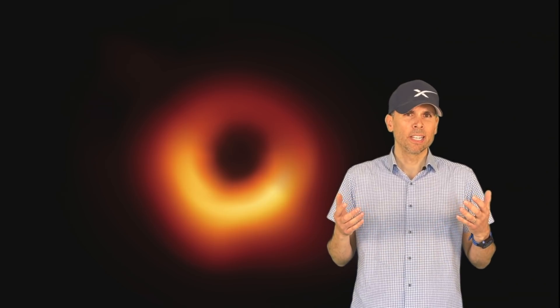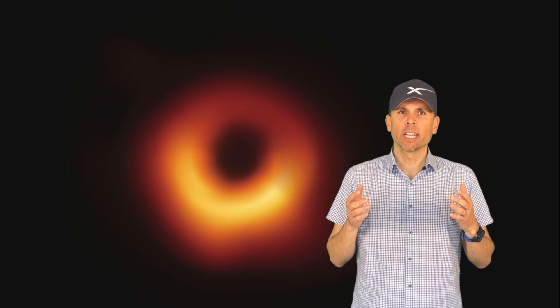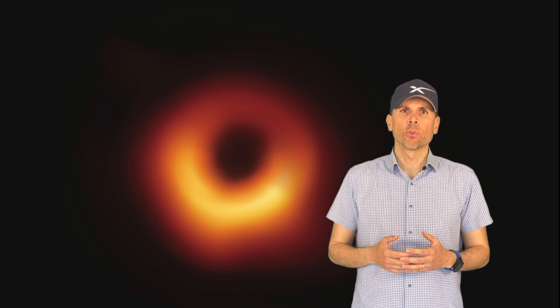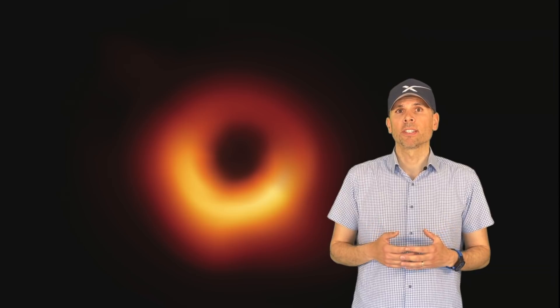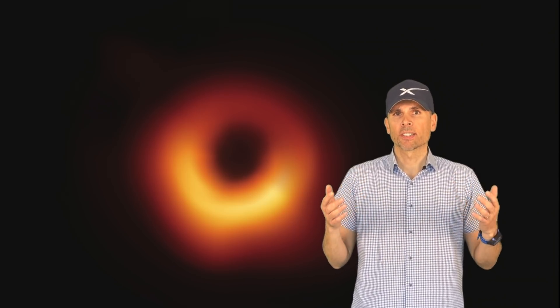Combined, this array acts like a telescope the size of Earth and it was able to stare at M87's black hole in April 2017. It then took two years for scientists to assemble the picture.